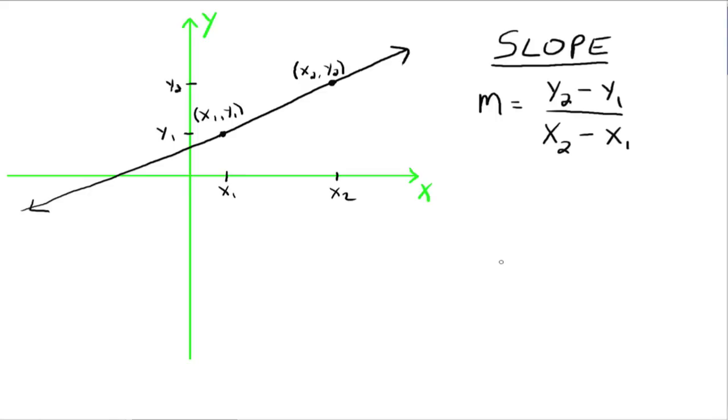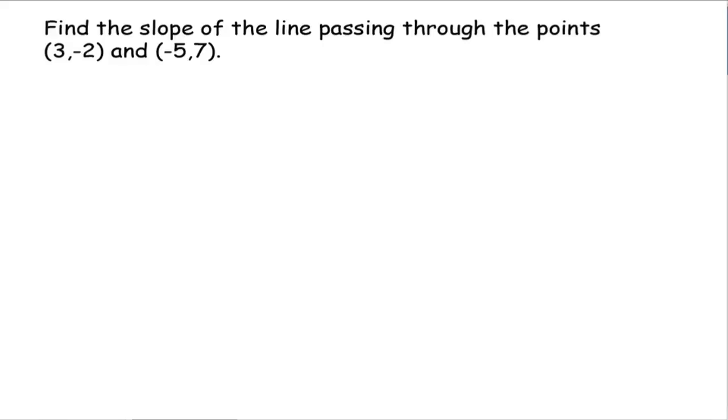It's kind of a formula, but it's better if you understand the concept as opposed to just trying to memorize this formula. The concept says the following: if you have two points that lie on your line, then the slope of that line has to be the difference of the y values divided by the difference of the x values. Let's look at an example. Find the slope of the line passing through the points 3, negative 2, and negative 5, 7.